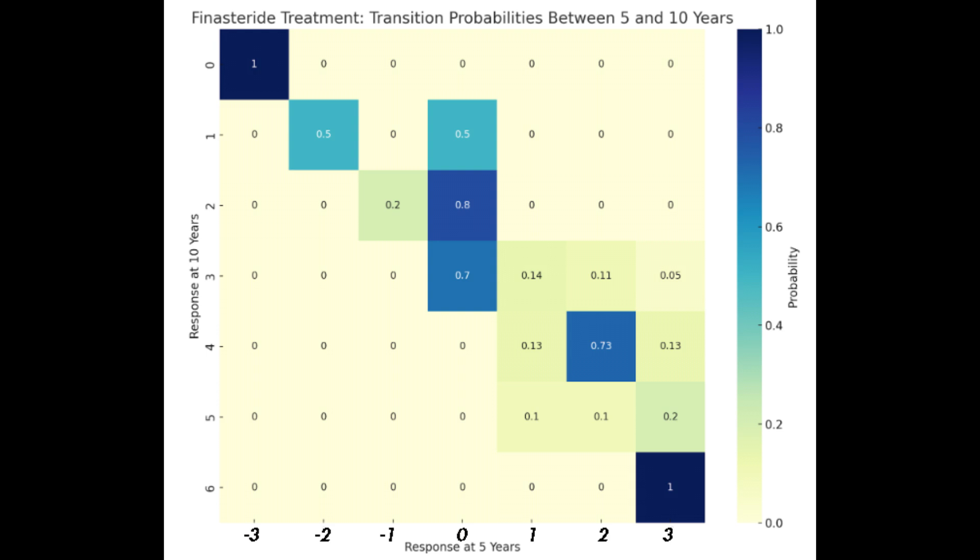This suggests that patients who were in a slightly improved state at the 5th year checkpoint had a 73% chance of maintaining that level of improvement at the 10th year mark.